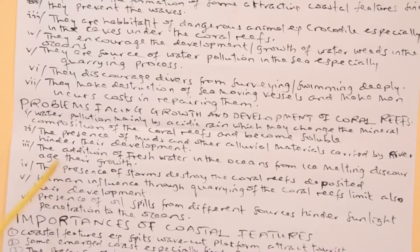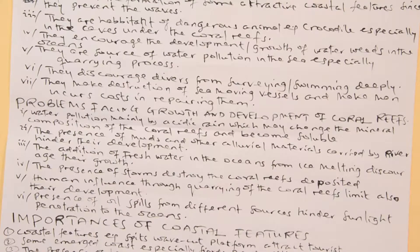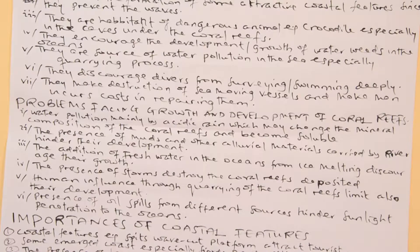Another problem is the influx of freshwater into the ocean from ice melting, which discourages growth. This organism grows in salty water. But wherever freshwater from melting ice is added, it makes a reduction in salinity. Therefore, this organism will no longer exist, because it is living in a salty environment.